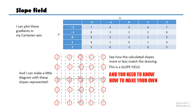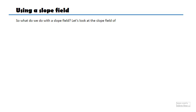This slope field might be something you get asked to do in your exam — you might actually have to draw one. So it's a good thing to practice a few of them. Most of the time the exam will be very specific on which points, one value apart from minus 2 to 2, etc. We'll look at different ways they might ask you to do this. Here is my equation again and here's the slope field.